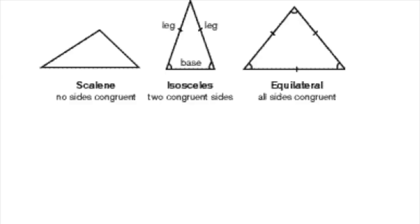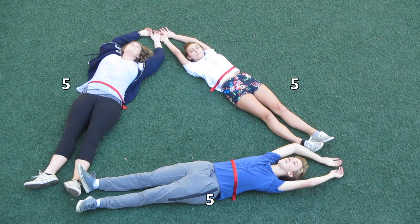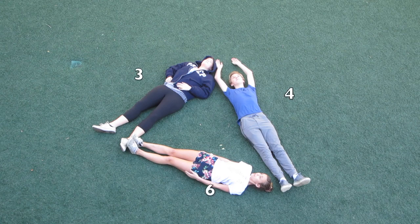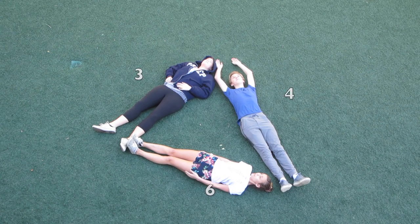By sides, a triangle can be equilateral, isosceles, or scalene. In an equilateral triangle, all sides are congruent. In an isosceles, at least two sides are congruent. In a scalene triangle, no sides are congruent. Equilateral triangles are also isosceles. If a triangle is equilateral, it is equiangular.